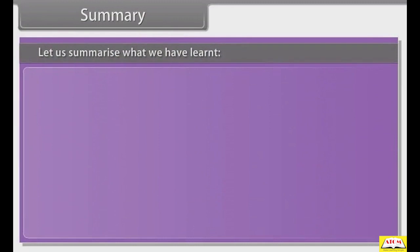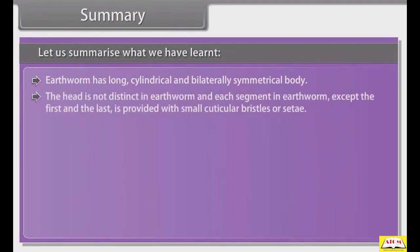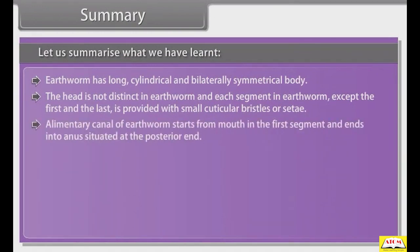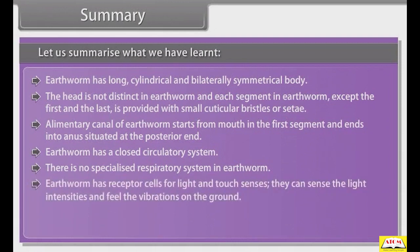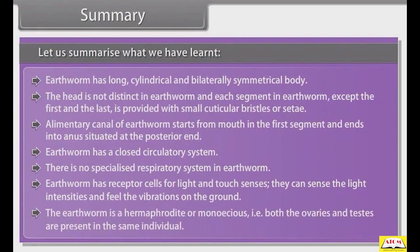Summary — Earthworm: Earthworm has a long, cylindrical and bilaterally symmetrical body. The head is not distinct, and each segment except the first and the last is provided with small cuticular bristles or setae. The alimentary canal starts from the mouth in the first segment and ends into the anus at the posterior end. Earthworm has a closed circulatory system, there is no specialized respiratory system, and it has receptor cells for light and touch. The earthworm is a hermaphrodite or monoecious — both ovaries and testes are present in the same individual.